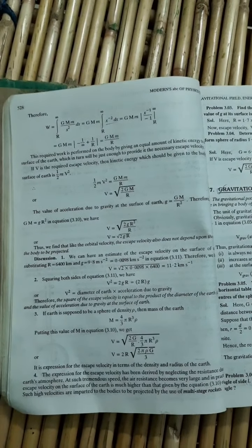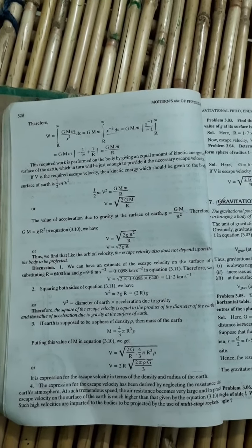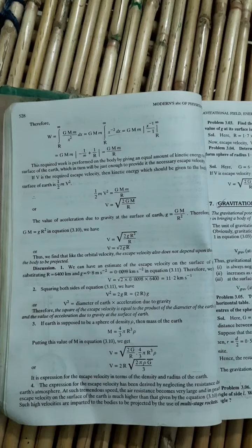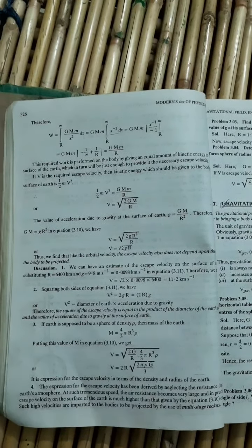It means if you are throwing an object with the speed of 11.2 km per second, then it will not return back on the surface of Earth. So this is all about the escape velocity. Thank you.